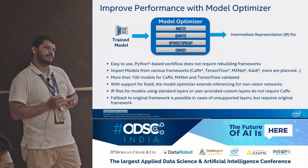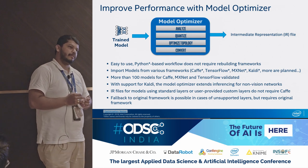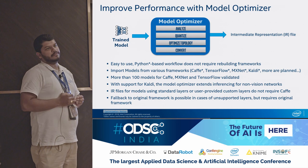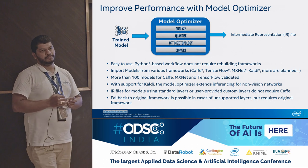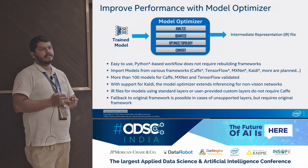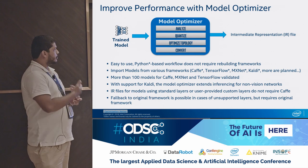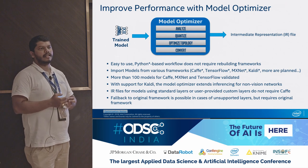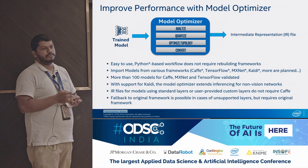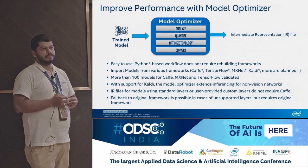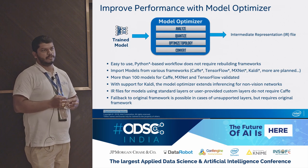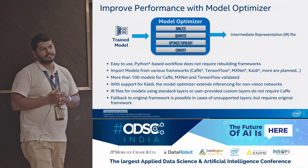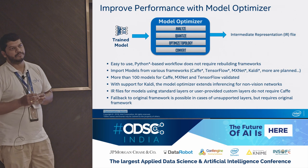For TensorFlow, you need to freeze the model first, and then you can feed it as input to OpenVINO. For Caffe, my samples are based on Caffe — I recently did AlexNet (BVLC AlexNet) — you just directly input the Caffe models. But for TensorFlow, you need to do the freezing step first.